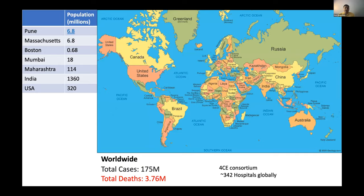I want you to look at this geopolitical map of the world. The work in India began when I was in Mumbai and Pune. A key theme of this talk is the contrast: the 4CE effort is majorly focused in the United States and Europe, and then you have the rest of the world. India, to me, represents the rest of the world.